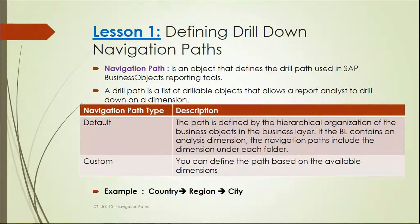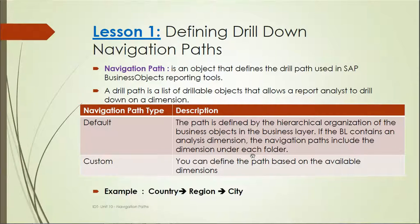There are two types of navigation paths: default and custom. In default, the path is defined by the hierarchical organization of business objects in the business layer. If the business layer contains an analysis dimension, the navigation paths include the dimension under each folder, going from parent to child. In custom, you can define the path based on available dimensions — you define the dimensions as a hierarchy yourself while designing the universe.